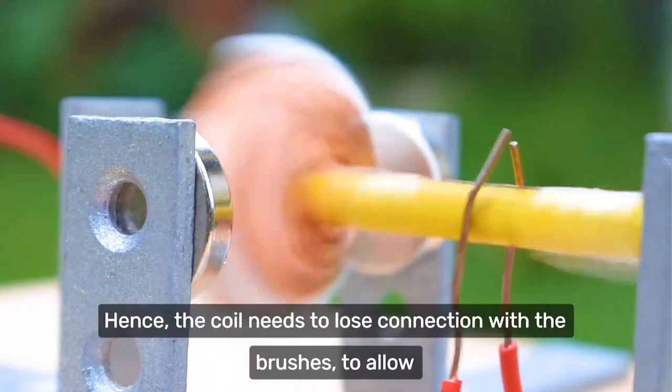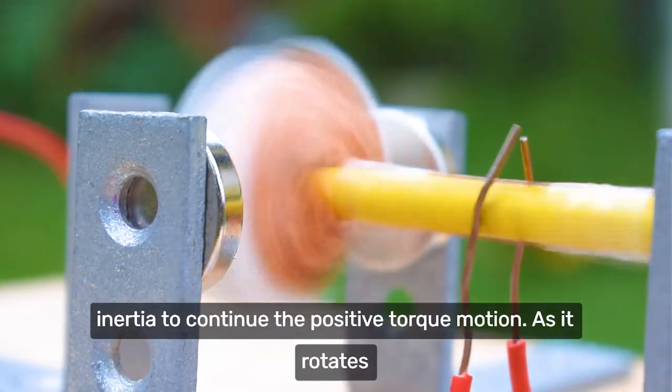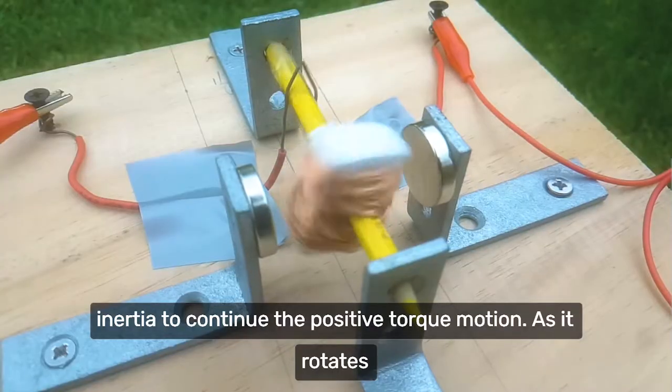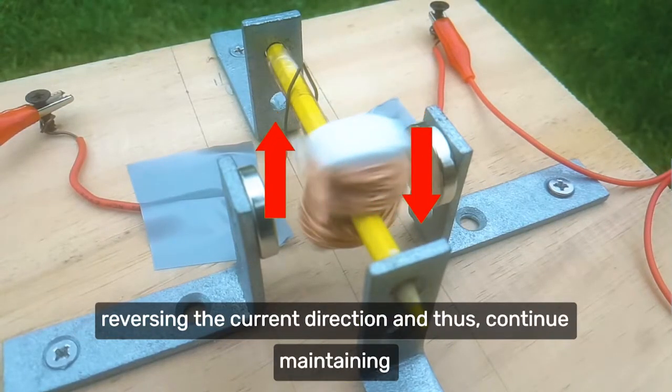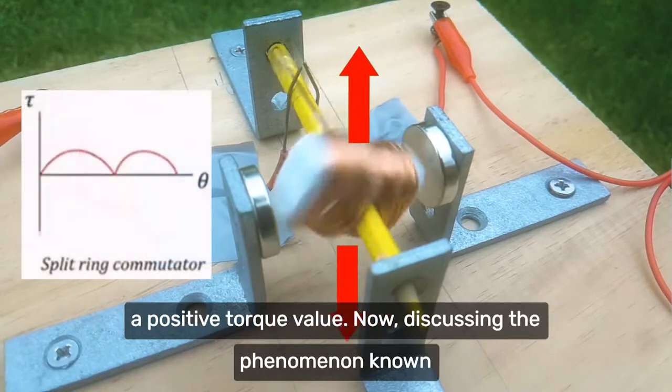Hence, the coil needs to lose connection with the brushes to allow inertia to continue the positive torque motion. As it rotates 180 degrees, the positive negative terminals have flipped, reversing the current direction, and thus continue maintaining a positive torque value.